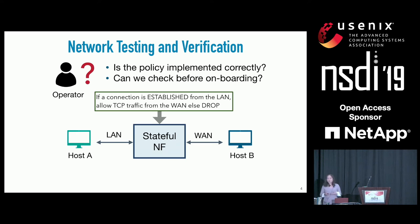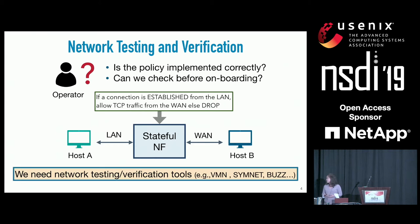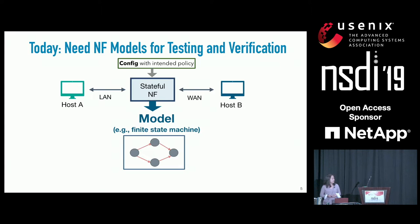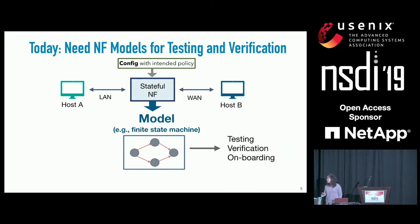Given that our current networks are composed of such stateful network functions, operators question whether their policy is implemented correctly by the network, or whether they should check an NF before onboarding it to the production network. To do so, operators rely on testing and verification tools such as VMN, SimNet, and Buzz. However, these tools today require having models of stateful network functions, and they use the model to guide the generation of verification proofs, testing, and the onboarding process.